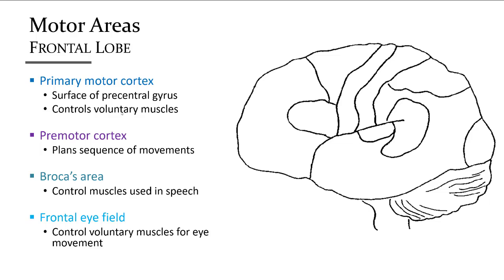Using the worksheet diagram, you can label and identify the motor regions of the brain. Within the frontal lobe, just anterior to the central sulcus, is the primary motor cortex that controls the muscles of the body. The premotor cortex plans the movement sequence and activates the primary motor cortex. Broca's area controls the muscles used to form words, while the frontal eye field controls voluntary scanning eye movements.